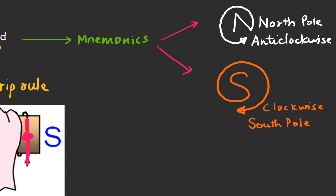You can apply the rule here as well. As you can see, the current is going in the clockwise direction, and as I told you, clockwise stands for south pole. So you can find the poles either way — using the right hand grip rule or using the method of mnemonics.